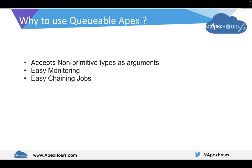Easy monitoring — when you call a Queueable Apex, it gives you a job ID which can be monitored in your setup, so it is an easy monitoring job. Also easy chaining of jobs. We know that future methods cannot call any other future methods, but in Queueable Apex you can call another Queueable class from one Queueable class, which means you can chain multiple Queueable jobs with each other.